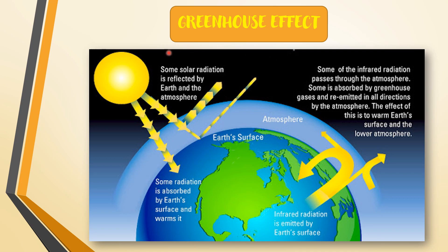Greenhouse effect: a part of the radiation from the sun that falls on the earth is absorbed, and part is reflected back into space. A part of the reflected radiation is trapped by the atmosphere. This trapping of radiation by the earth's atmosphere causes warming of the earth, which is known as the greenhouse effect. Excess CO2, methane, nitrogen oxide, and water vapors are the gases responsible for the greenhouse effect, and are therefore called greenhouse gases. Some infrared radiation passes through the atmosphere; some is absorbed by greenhouse gases and re-emitted in all directions, warming the earth's surface and lower atmosphere.